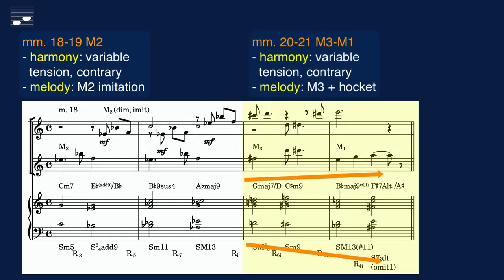The harmonic tension level increases in measure 20 and ends on an incomplete altered chord. Here also you see contrary motion. The original lead is coupled with a hocket variant in the top staff.